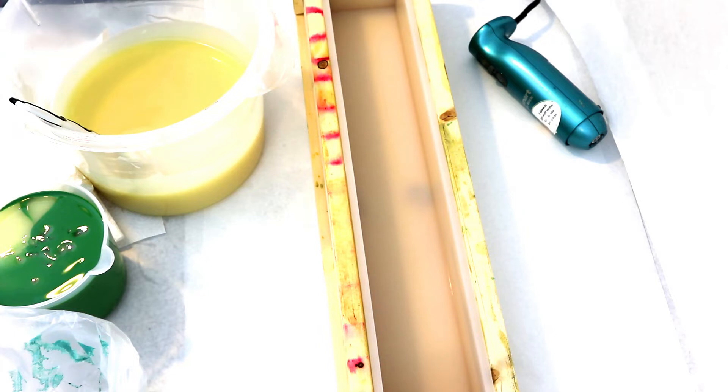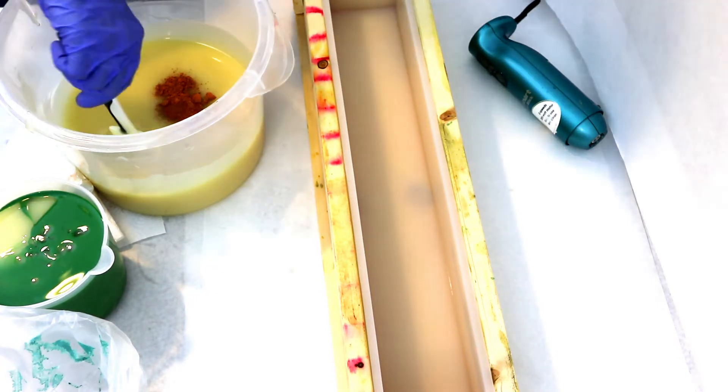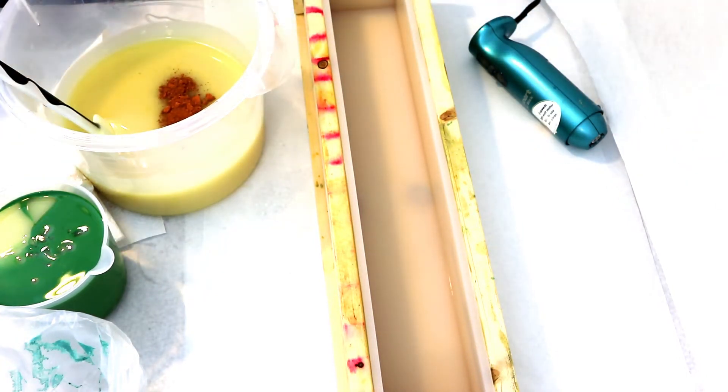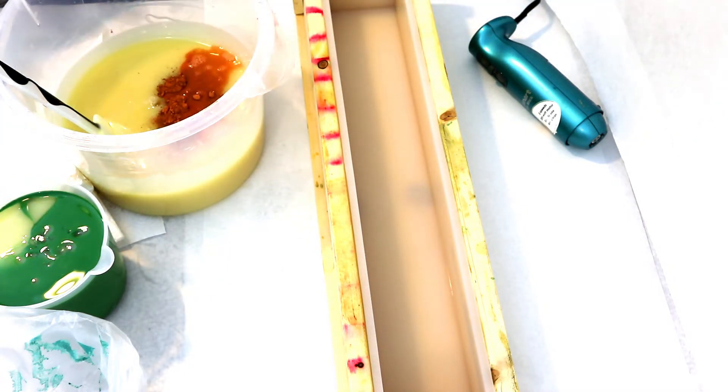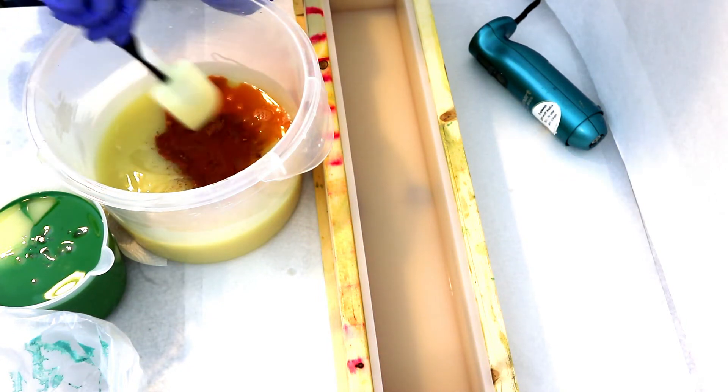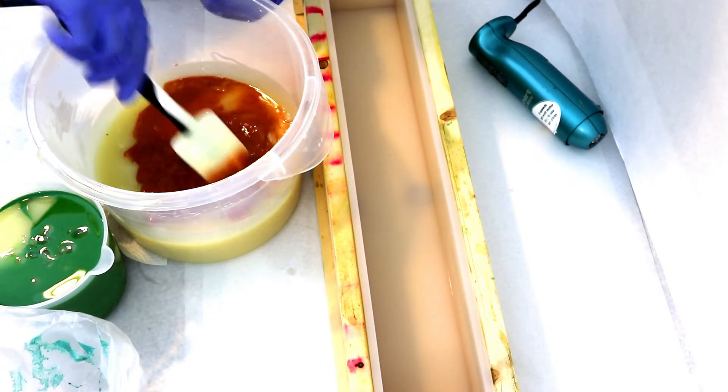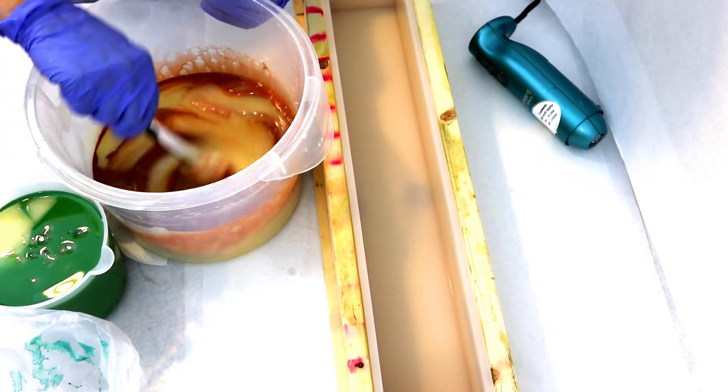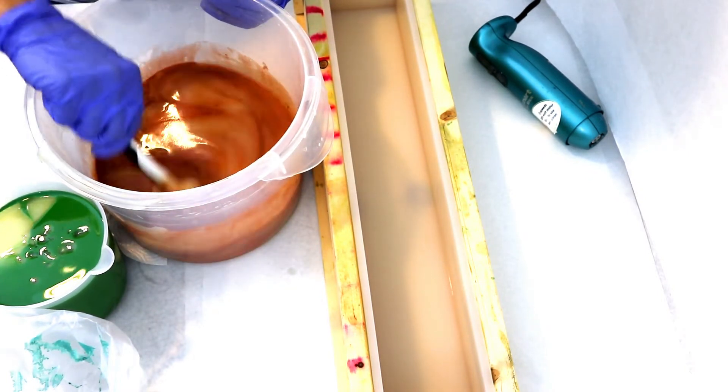I'm going to put the rose clay and kaolin clay in the base part because it was getting a little thick at this point. I like to put my clay powder in dry and then add a little bit of water to it while it's in the soap batter. It seems to help it mix more thoroughly and evenly so I don't get clumps of clay, and I don't have to use my stick blender.